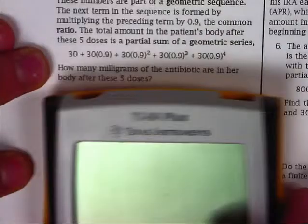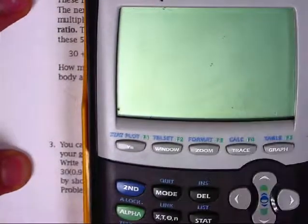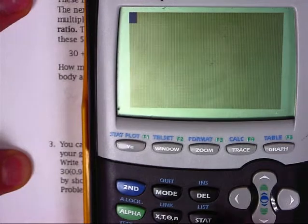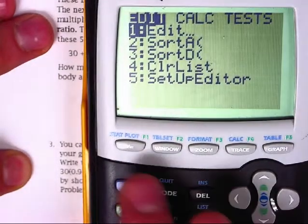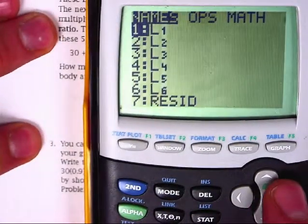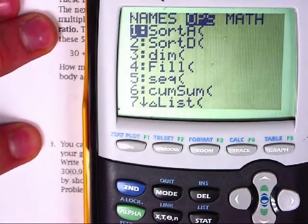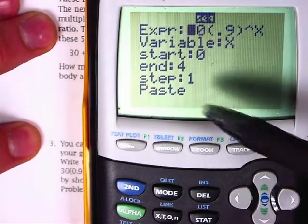Real quickly, on the newer operating system calculator, you find the information in the same spot. I'm just going to do the sequence command. If you hit the list button, you go over to operations and hit number 5 for sequence. It brings you to this menu, which is actually a lot nicer for you, because then you don't have to remember the commas and everything.